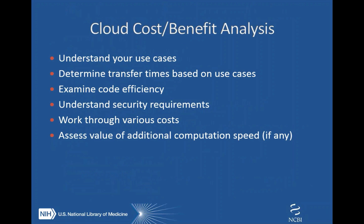Understanding your use cases: if you only need one gene or two genes, or maybe a 5 or 50 megabase region, it's going to be a lot cheaper than transferring the entire genome. The BAM files will contain most of the reads of interest in that region, even if they may not be aligned exactly as you would prefer. Based on these use cases, you can determine transfer time. Think about your code efficiency and your security requirements, and consider various costs before transferring everything up to a storage cloud.